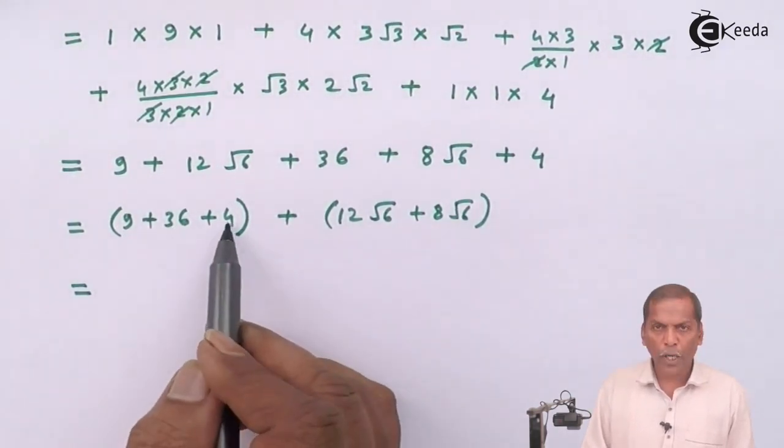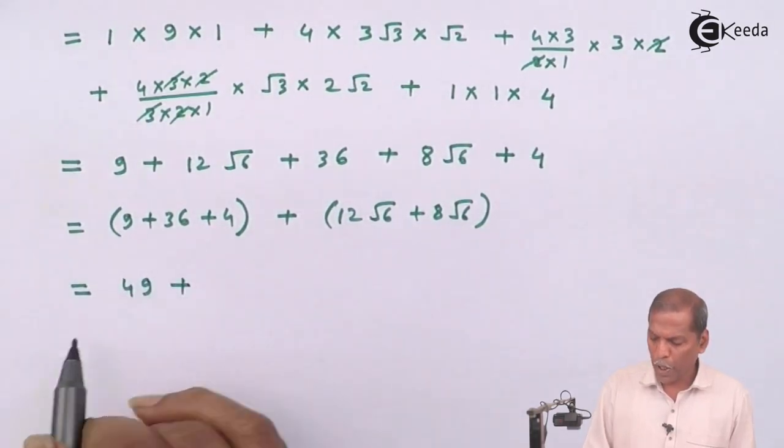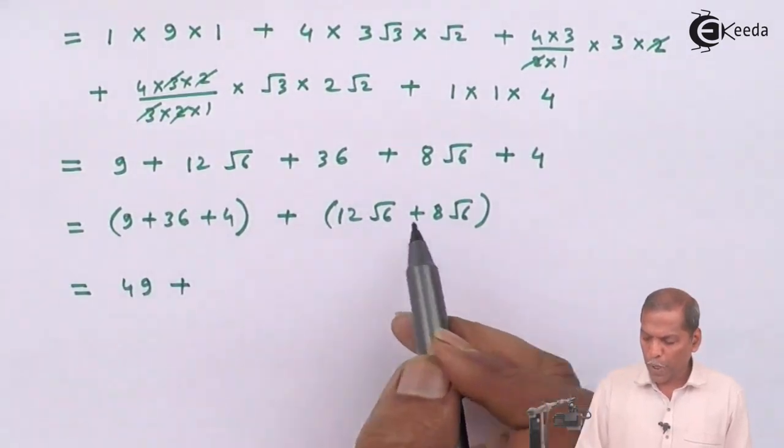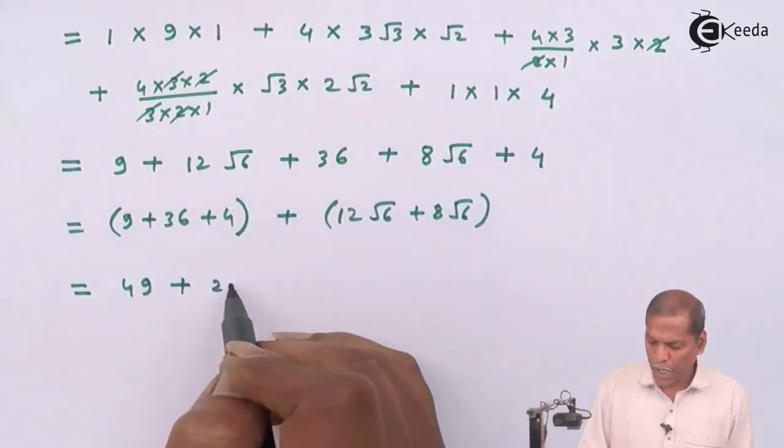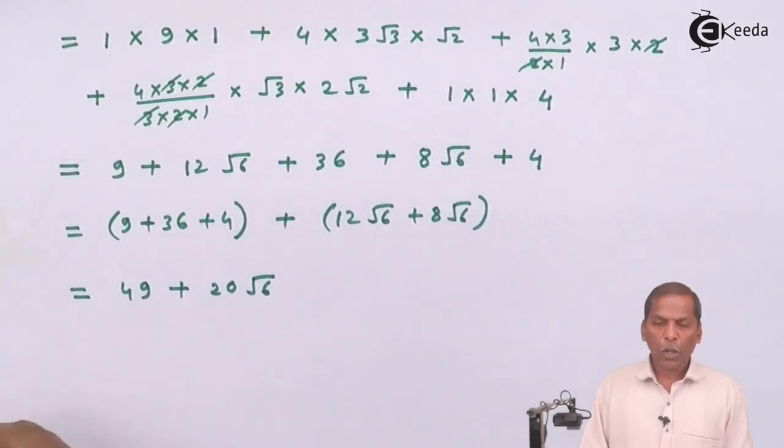So on adding this we get 36 plus 4, 40 plus 9 so that gives 49 plus 12 root 6 plus 8 root 6, adding we get 20 root 6. So this is the required solution for the given problem. Thank you.